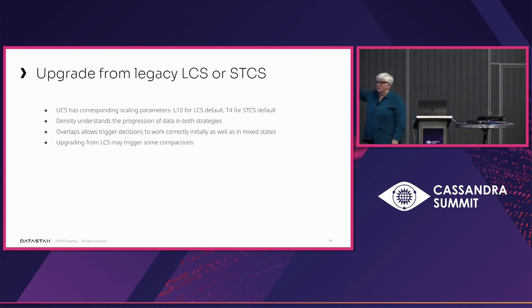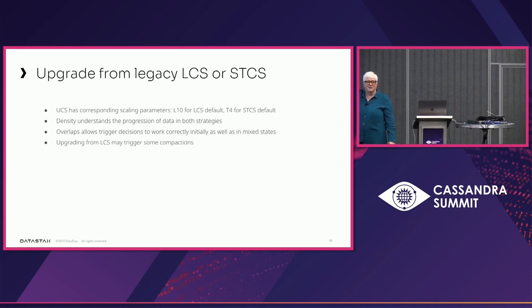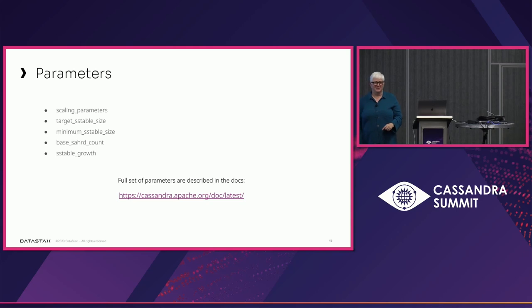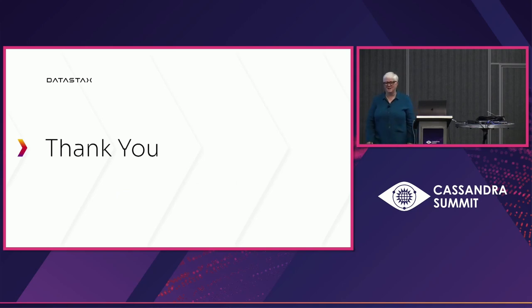You don't get to say this too often about Cassandra upgrades, but in this case it really is easy. All you need to do is go in and change the factors in the cassandra.yaml. The factors you are changing are: scaling parameters, target SSTable size, minimum SSTable size, base shard count, and SSTable growth. There is way more detail in the docs if you want to go look at this topic. Thank you very much — I hope that gave you some idea about how to use it.